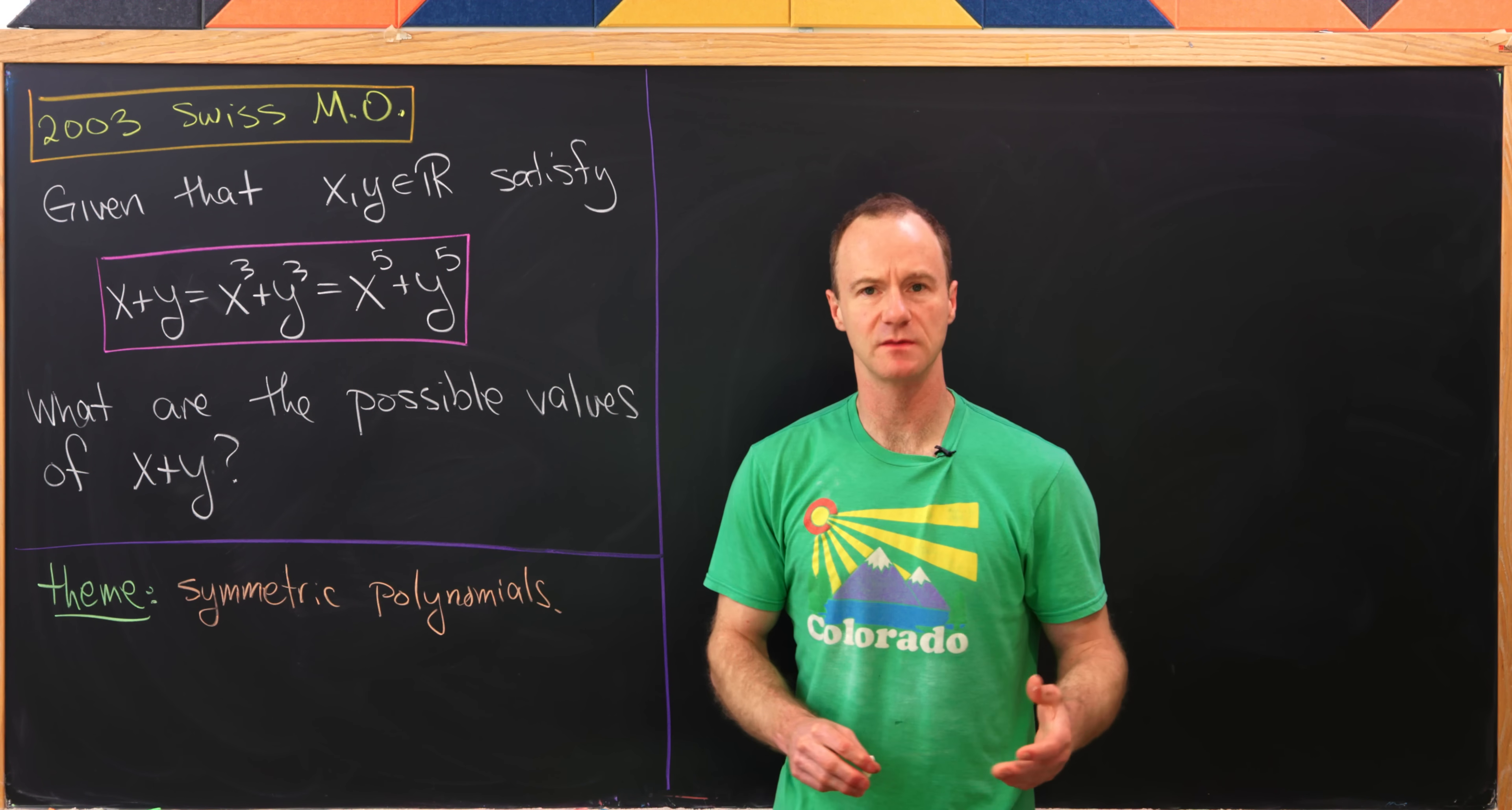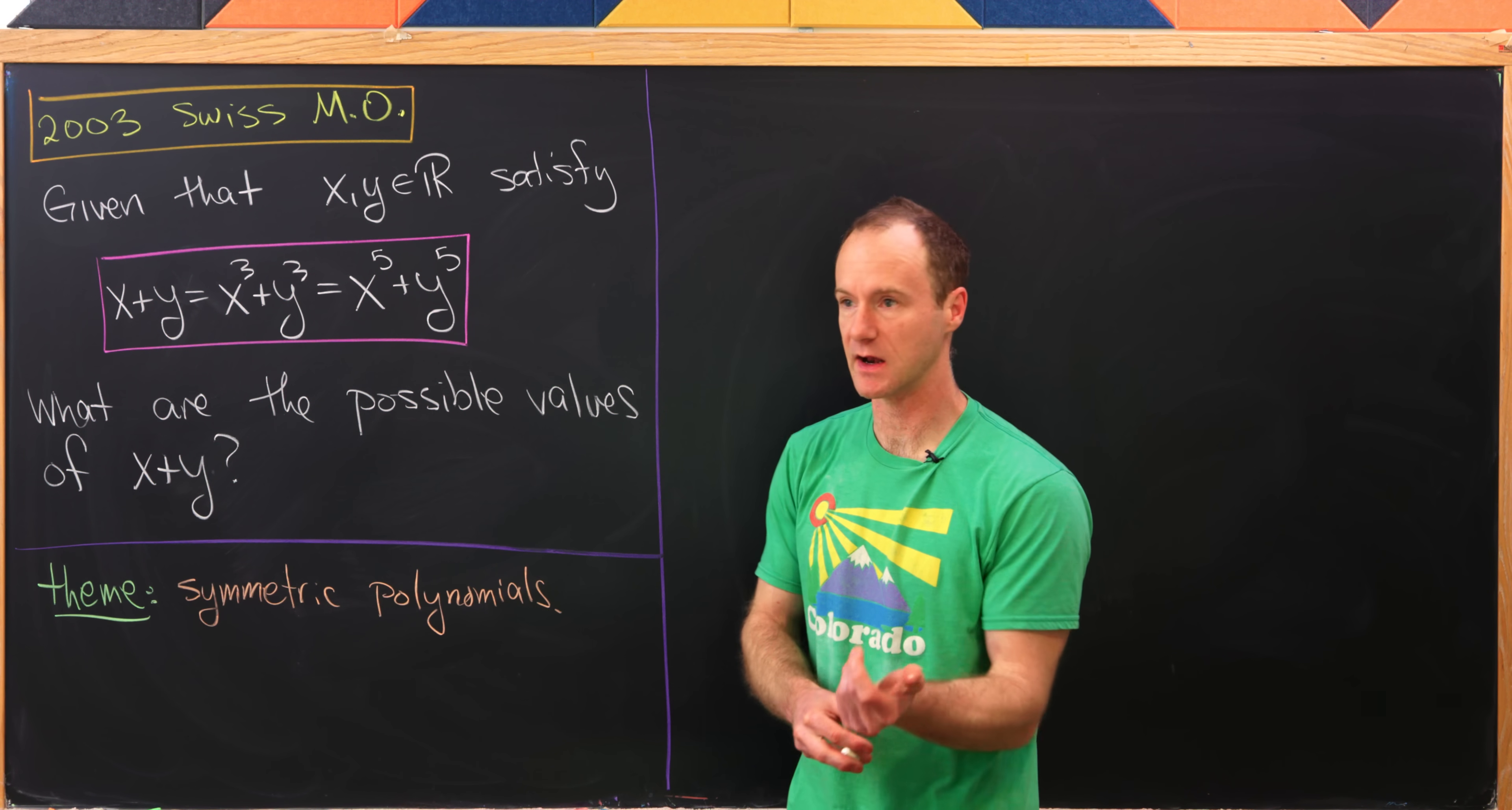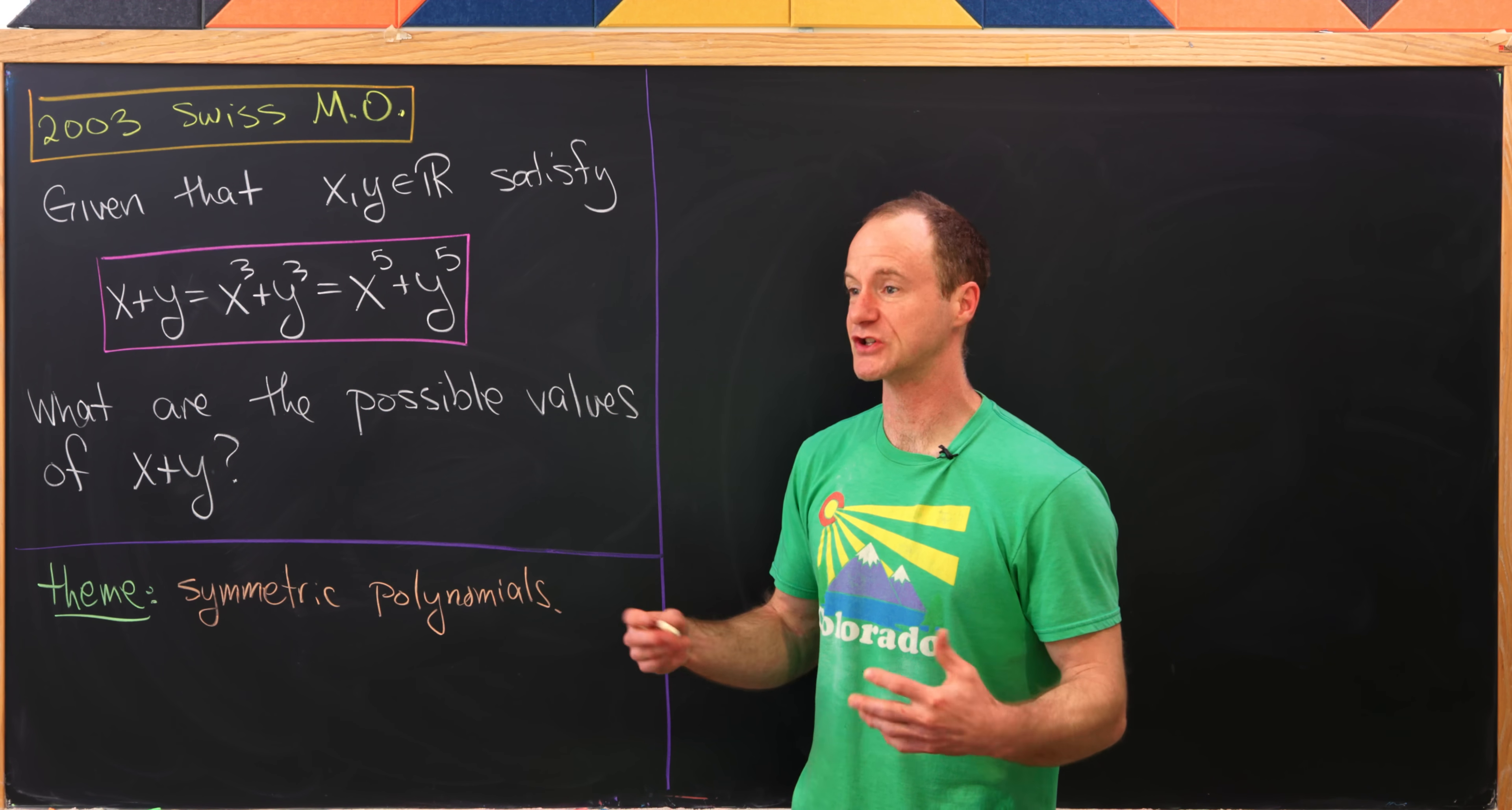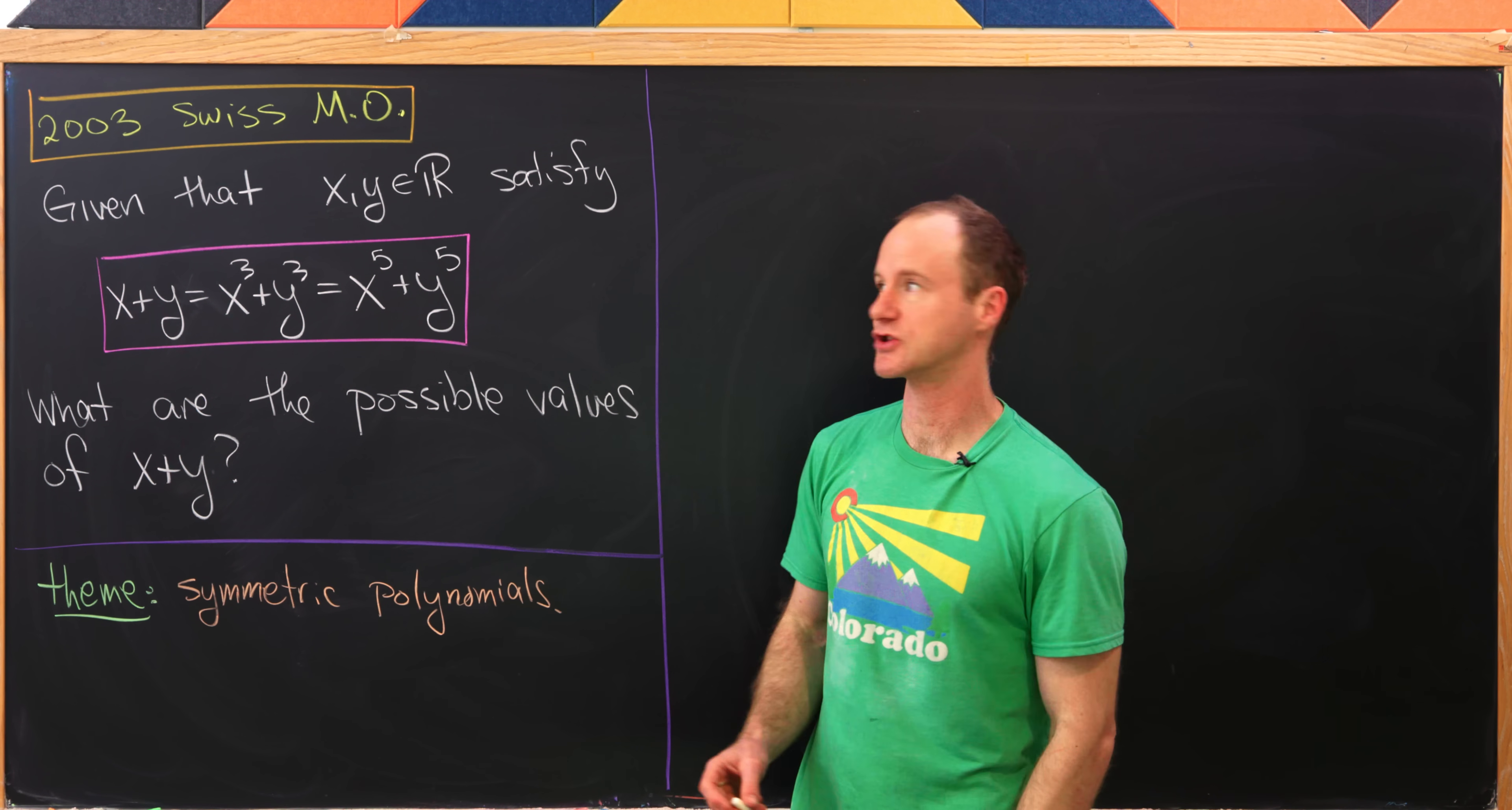Today we're going to look at a nice problem that comes from the 2003 Swiss Math Olympiad. I would say that the theme of this problem is symmetric polynomials, or really the restrictions put on a system when everything is symmetric.